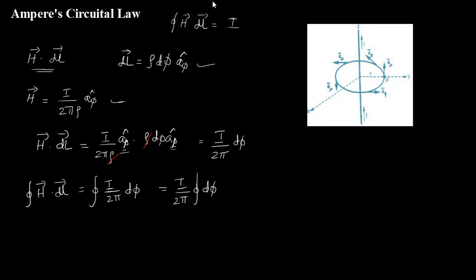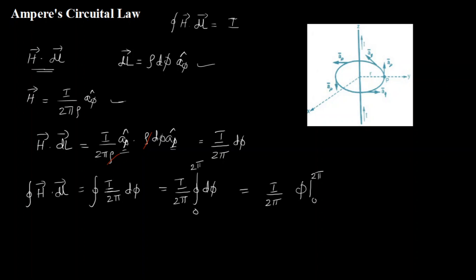From where to where to integrate dφ is the question. Since dL equals ρ dφ A_φ cap is arc length, I have to integrate dφ over the entire circular path. Starting from 0 and returning back to the start is 360 degrees, so I integrate from 0 to 2π in radians. Integrating dφ from 0 to 2π gives φ evaluated at the limits, yielding I / 2π times 2π. The 2π terms cancel, and I get the closed integral of H dot dL equals I.